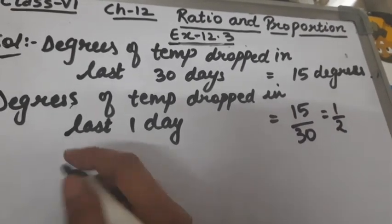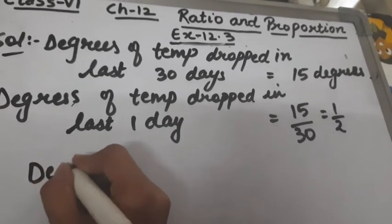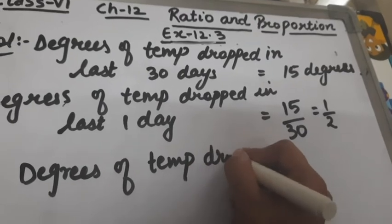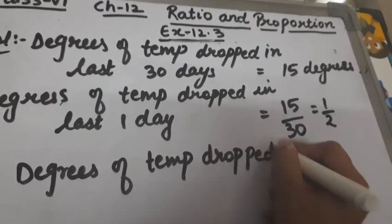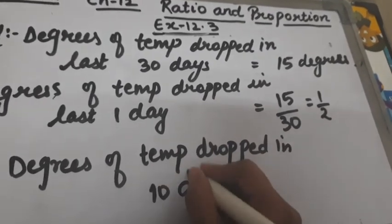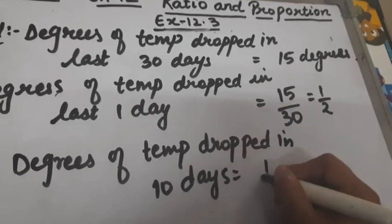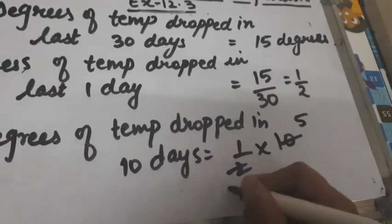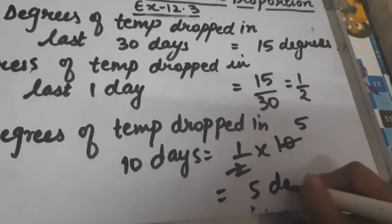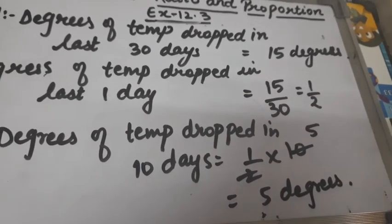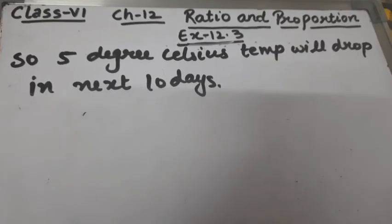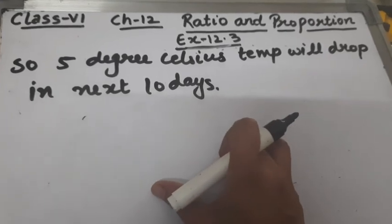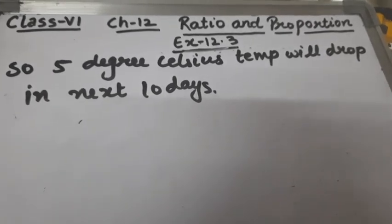Now we will find degrees of temperature dropped in 10 days. We multiply 1/2 by 10: two fives are ten, so the answer is 5 degrees. So 5 degrees Celsius temperature will drop in the next 10 days. This is question number 5 of Exercise 12.3. Thank you.